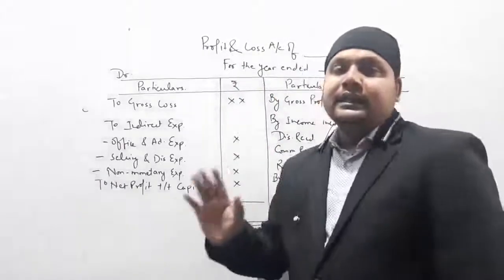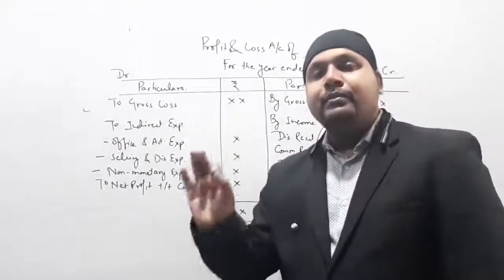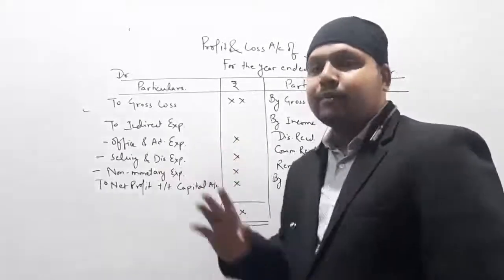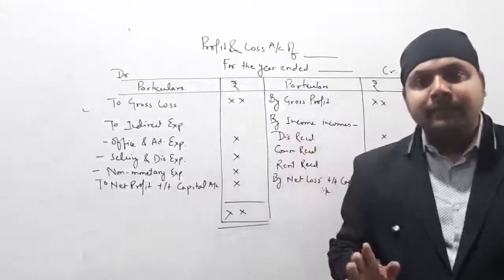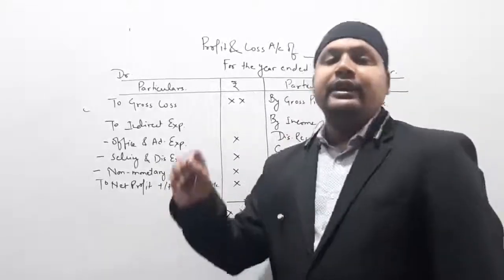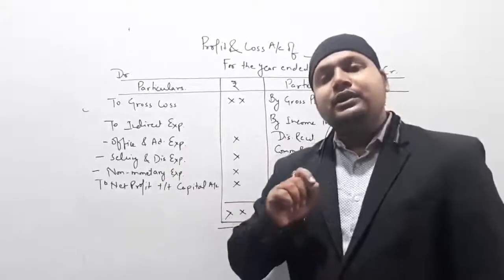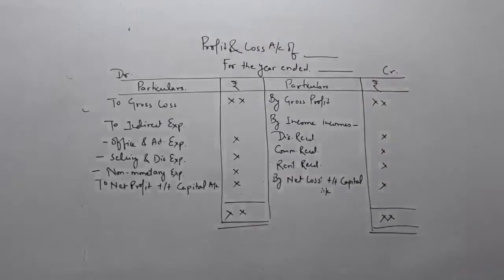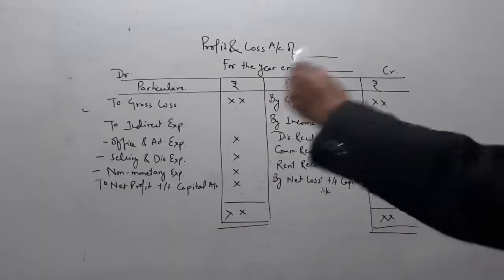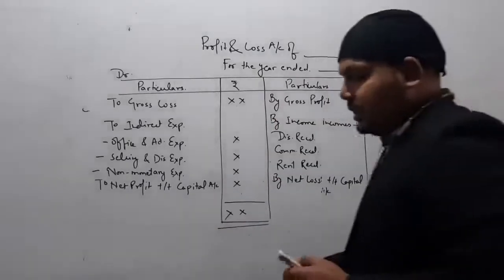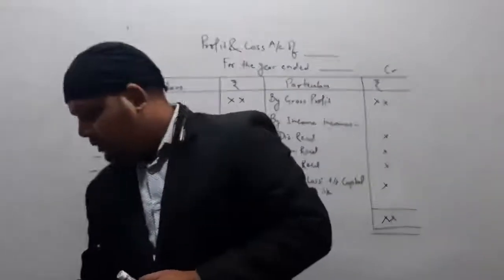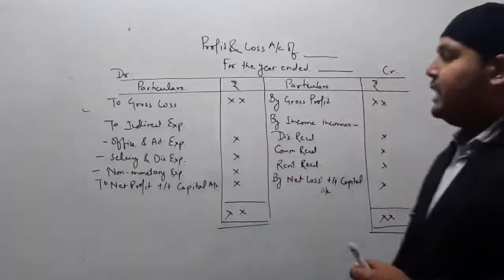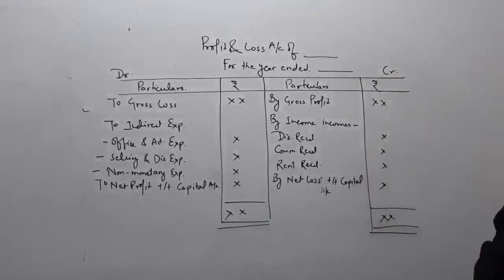If the question clearly says to make a profit and loss account format, then you will calculate net profit, net loss, gross profit, and gross loss accordingly. If the question asks to make a trading account and profit and loss account, you will have the option to make the account and calculate the profit, or solve without the account format. So in simply what we can say is that net profit and net loss can be calculated using various formulas.